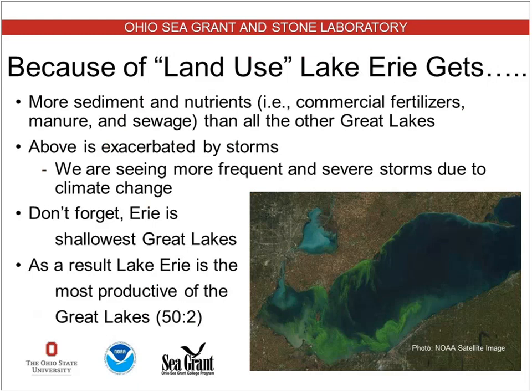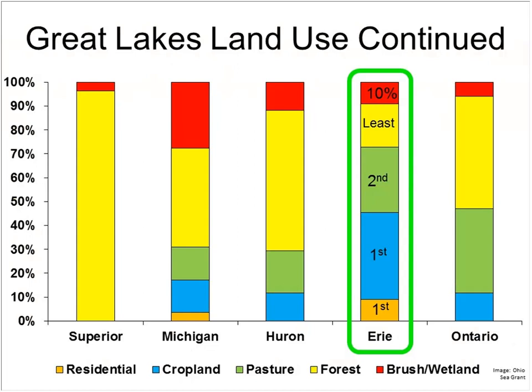These harmful algal blooms and nutrient loads are exacerbated by storms. What we are seeing is more frequent storming events, but also more severe storm events — larger in size as far as the volume of water dropped. Lake Erie is the shallowest of the five Great Lakes, so these inputs are going to elevate concentrations in a pretty small water body relative to the other Great Lakes. As a result, Lake Erie is clearly going to be the most productive of the Great Lakes.